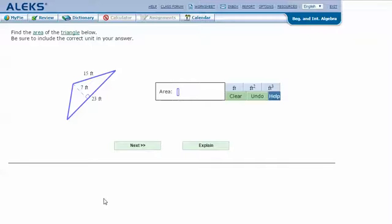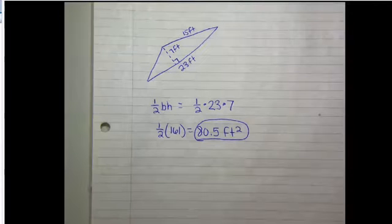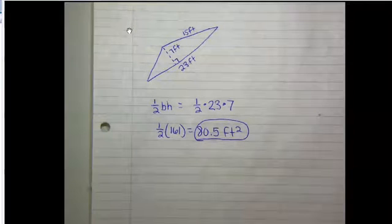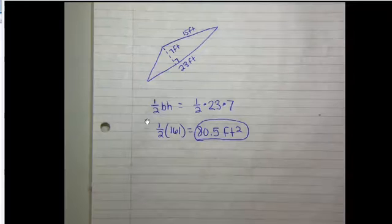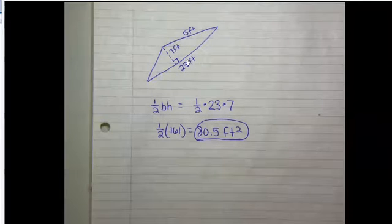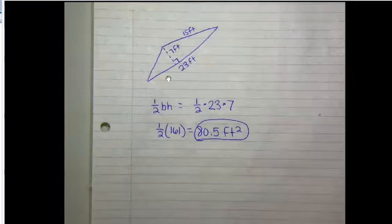Here are my notes: find the area of this triangle. And again, the area of the triangle is half of the base times height. And so here the base is 23 and the height is 7.